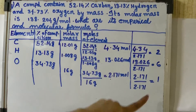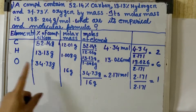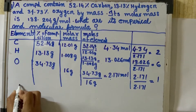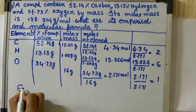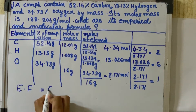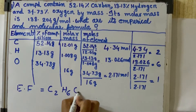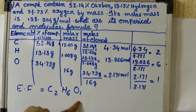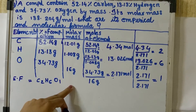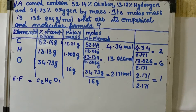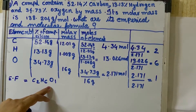So let's get this data. We have to find the empirical formula. The empirical formula has carbon 2, so C2; hydrogen 6, so H6; and oxygen 1. This gives us the empirical formula C2H6O.